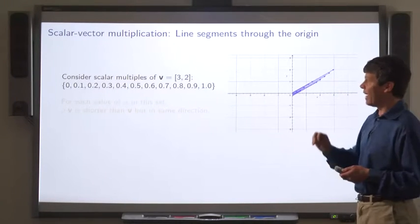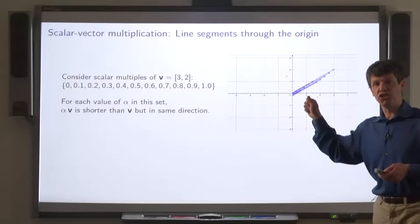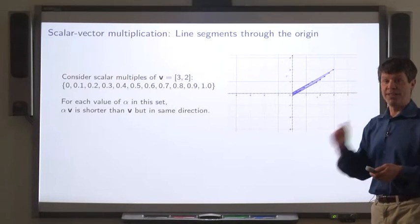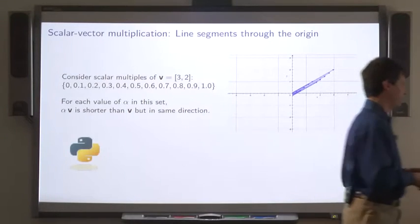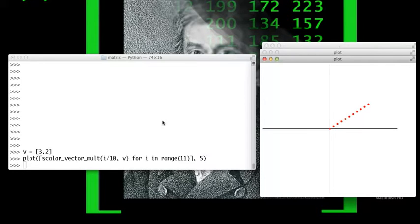Now, let's start with a vector v, say 3, 2, and consider a whole bunch of scalar multiples using scalars ranging from 0 to 1. So each scalar gives you a different size arrow in the same direction. So let's try that in Python. We start with a vector v, represented as a two-element list. Now, we're going to plot a whole bunch of scalar-vector multiplications, and you can see it's starting to form a line segment. Let's do the same thing but with a lot more points.